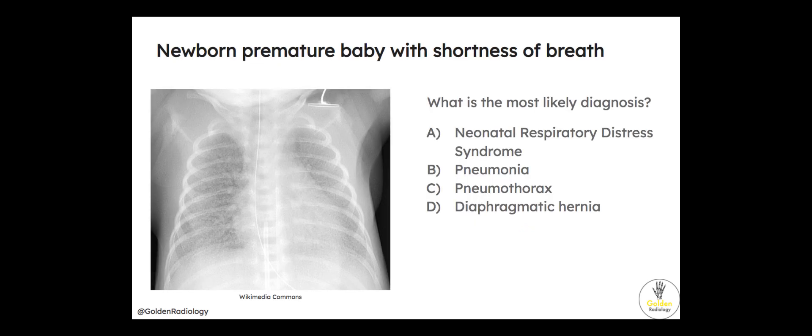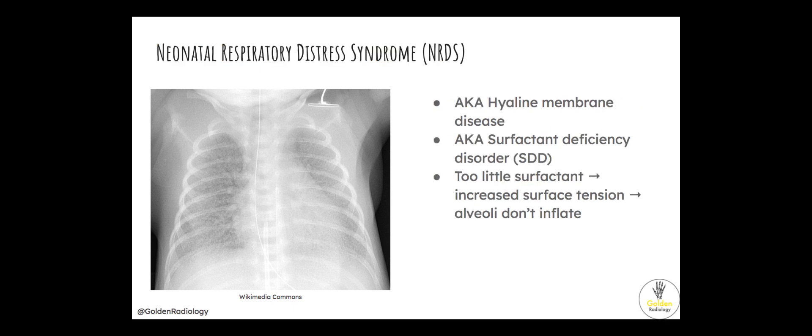Let's get started with the question. Newborn premature baby with shortness of breath — what is the most likely diagnosis? Neonatal respiratory distress syndrome, pneumonia, pneumothorax, or diaphragmatic hernia? This is neonatal respiratory distress syndrome, also known as hyaline membrane disease, also known as surfactant deficiency disorder. And it's caused by too little surfactant.